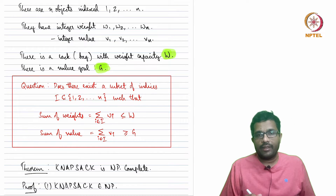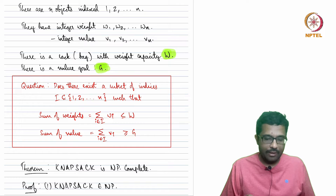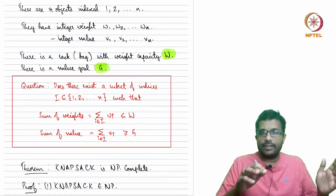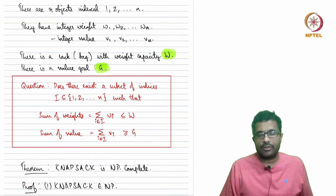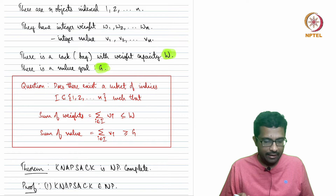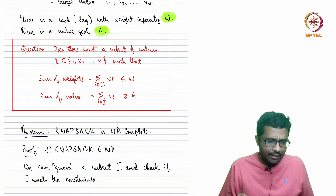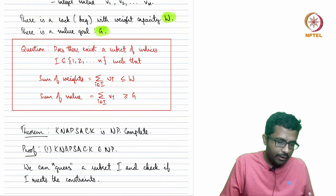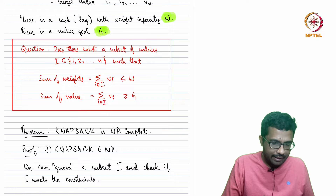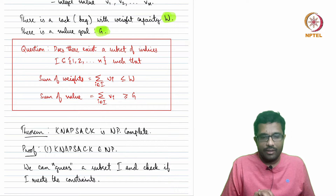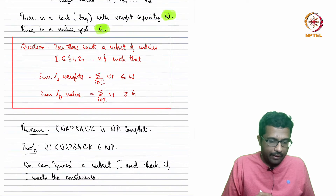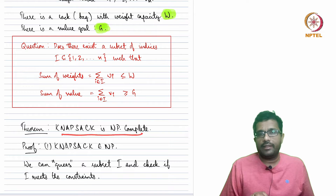The question is: does there exist a subset of items whose sum of weights is at most the capacity W, and whose sum of values is at least the goal G? So we want items whose weights are below capacity but whose value is above the goal. This problem happens to be NP-complete.